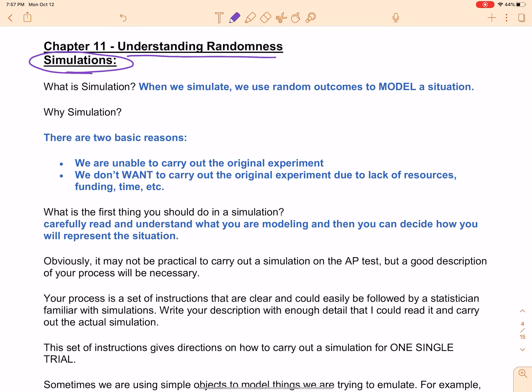Now you'll have a better understanding of how we randomize for our experiment. We're going to talk about understanding randomness and why we need it. The first thing we need to discuss is what is a simulation exactly. As the name implies, we simulate a random outcome to model a situation. Why would we want to do that?